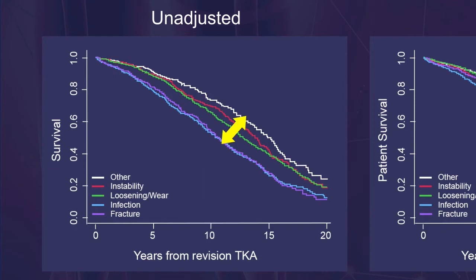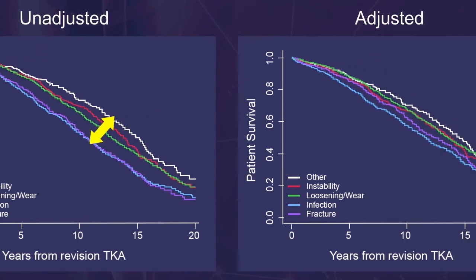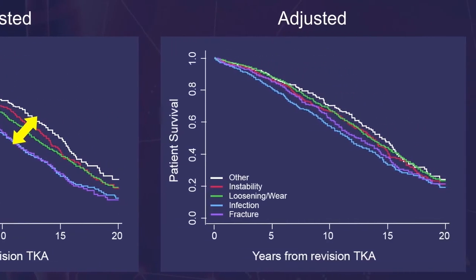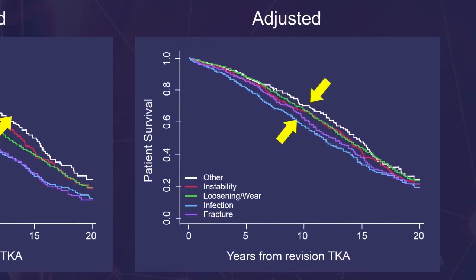However, these differences were partially due to differences in patient characteristics, since the age, sex, and comorbidity adjusted survival curves are closer together. Since confounding is present in this example, only observing the unadjusted Kaplan-Meier survival curves is inaccurate and misleading. The adjusted survival curves are a more accurate representation of the relationship between the revision indication group and survival.